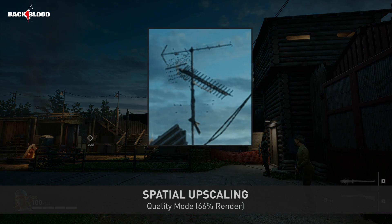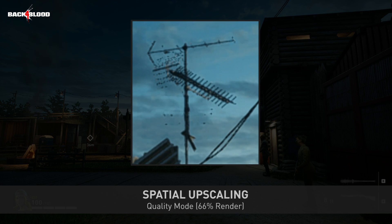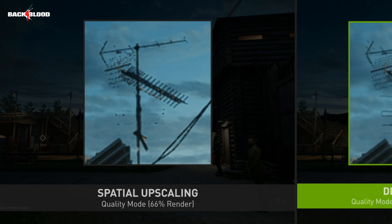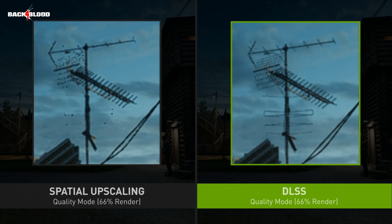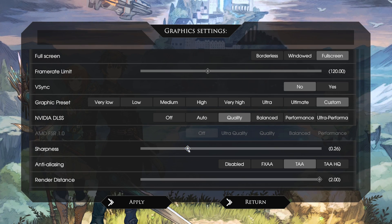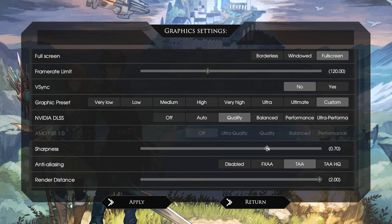In this example we see how the sharpening in a spatial upscaling method is really struggling with fine lines. There's just not enough information in the input to the sharpener for it to approximate the lines that the game is actually trying to draw. DLSS doesn't suffer from this because it doesn't rely on sharpening to add detail — instead it reconstructs detail using temporal methods and artificial intelligence. If you want the output of your DLSS rendering to be sharper, you can use the built-in sharpener or the one from the game.